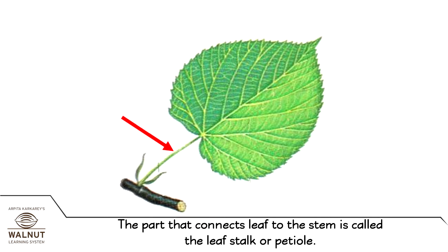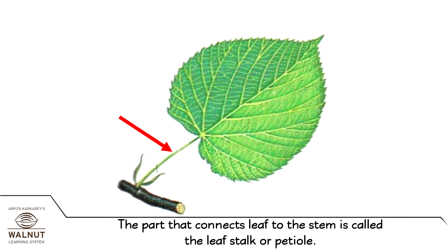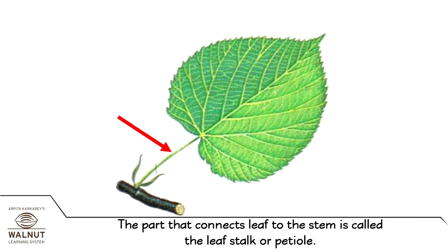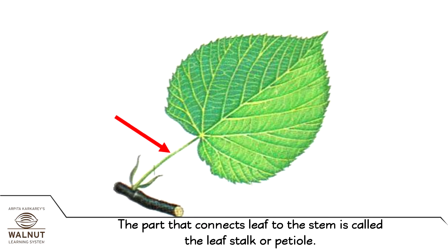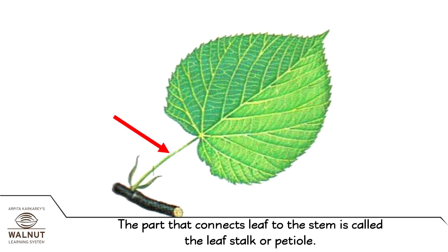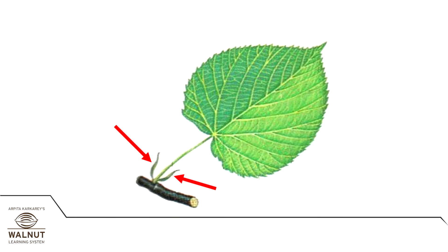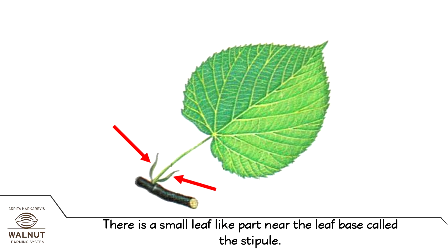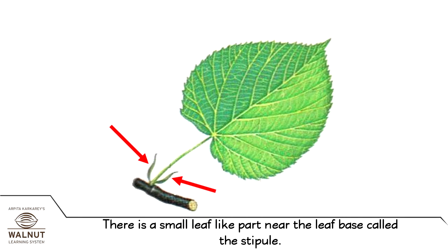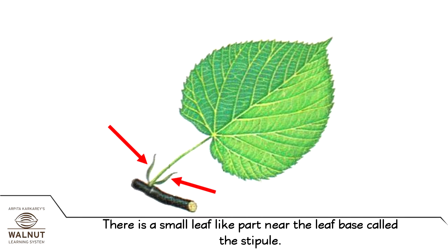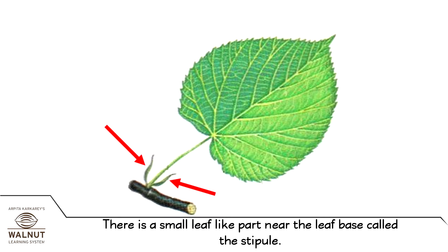The part that connects the leaf to the stem is called the leaf stalk or petiole. There is a small leaf-like part near the leaf base called the stipule.